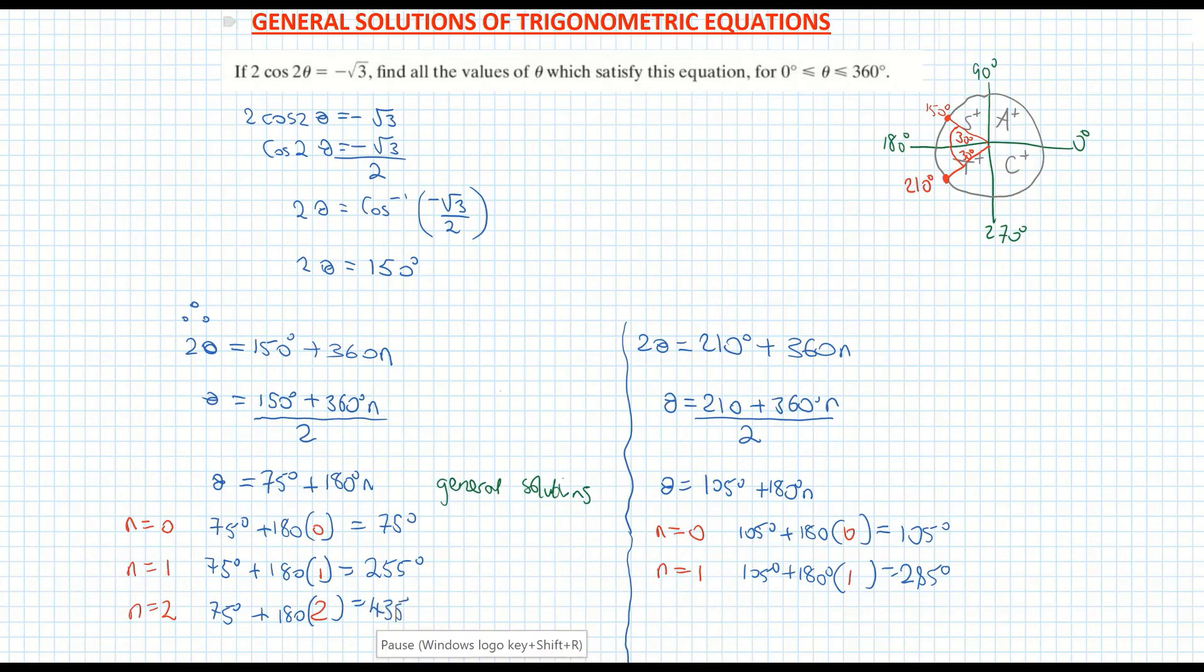So now you can hopefully see that 435 degrees is not within the parameters of zero to 360 degrees. So I'm going to exclude n is equal to two. That's not going to be one of my values for theta. And I'm going to just check n is equal to two over for my second general solution. But it shouldn't work because 105 is greater than my 75. But let's do it, 105 plus 180 times two, which is 465 degrees. So like I said, we'll be excluding n is equal to two there.